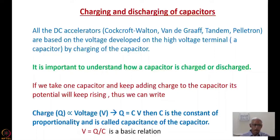If we take one capacitor and keep adding charge to it, its potential will keep rising according to that equation. We can say effectively that if the voltage across a capacitor is V, that means you have transferred Q amount of charge to it. So you can write that charge Q is proportional to the voltage generated on that capacitor.